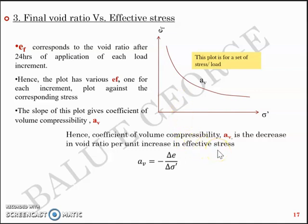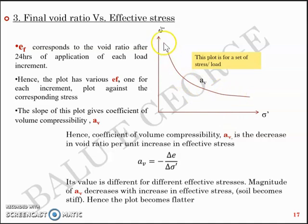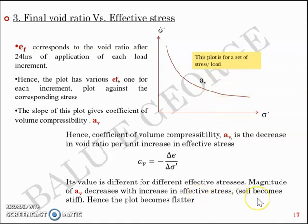When effective stress increases, void ratio decreases, hence the negative sign. The value of AV is different at different effective stresses. Intuitively, AV decreases with an increase in effective stress — towards the left portion of the curve the slope is higher, and as effective stress increases the slope decreases, meaning the soil becomes stiffer and the plot becomes flatter.